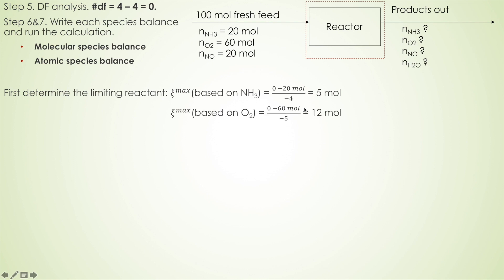Do the same thing for oxygen. Oxygen is in the reaction, so assume it goes to completion — zero output. The input is 60 moles, divided by negative five, because oxygen is also a reactant, giving χ_max = 12. Since five is less than 12, ammonia is the limiting reactant.